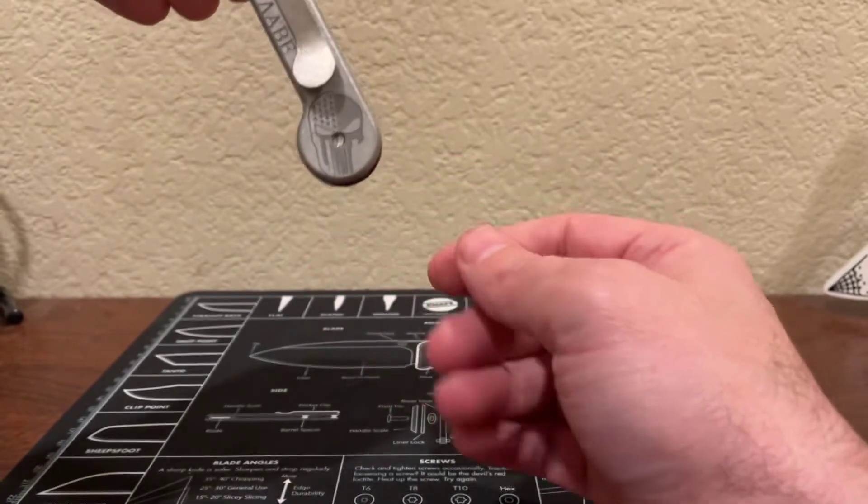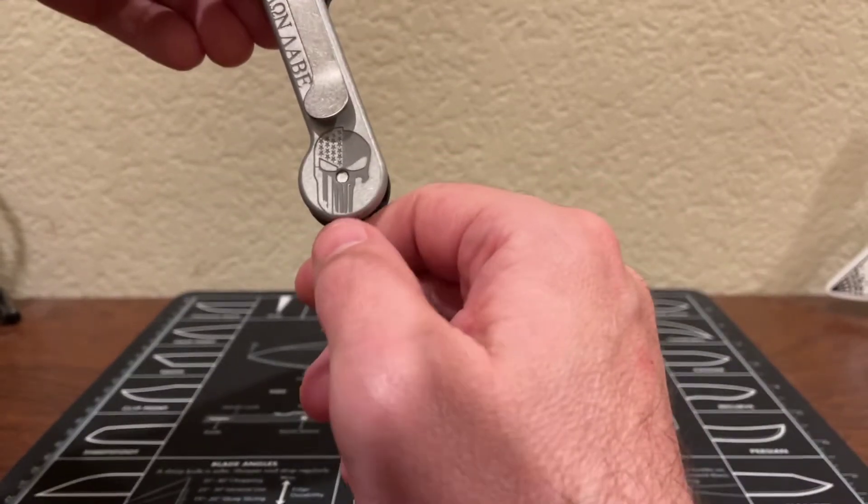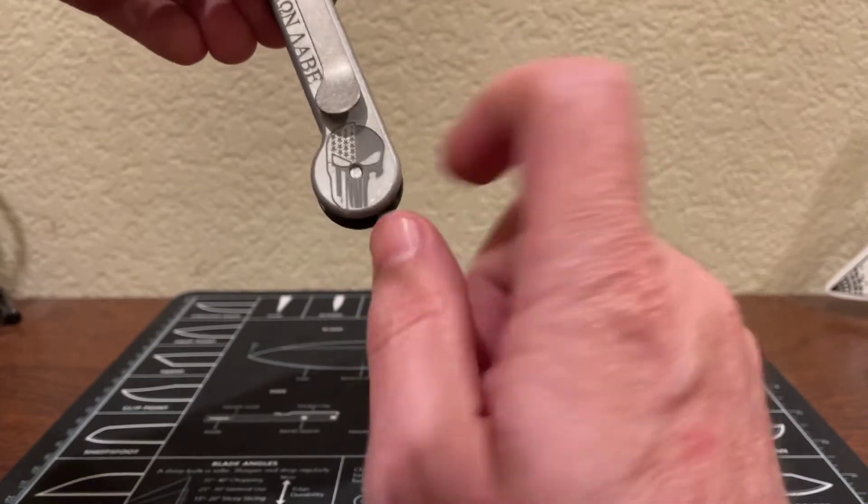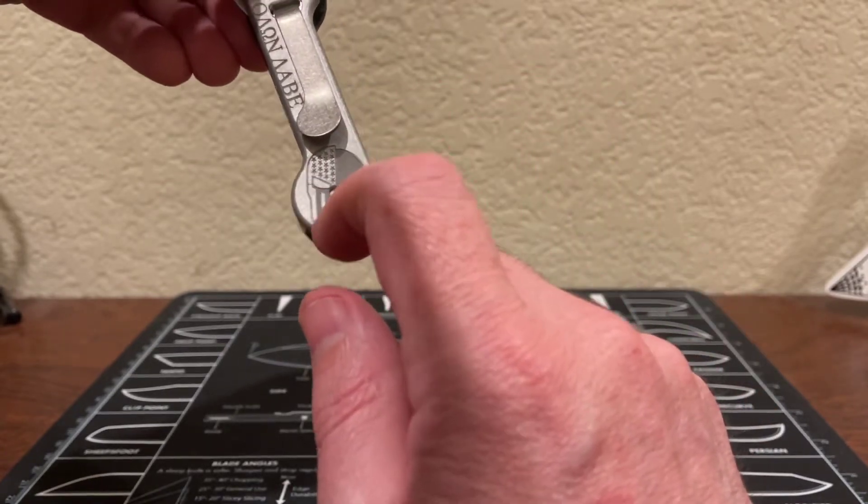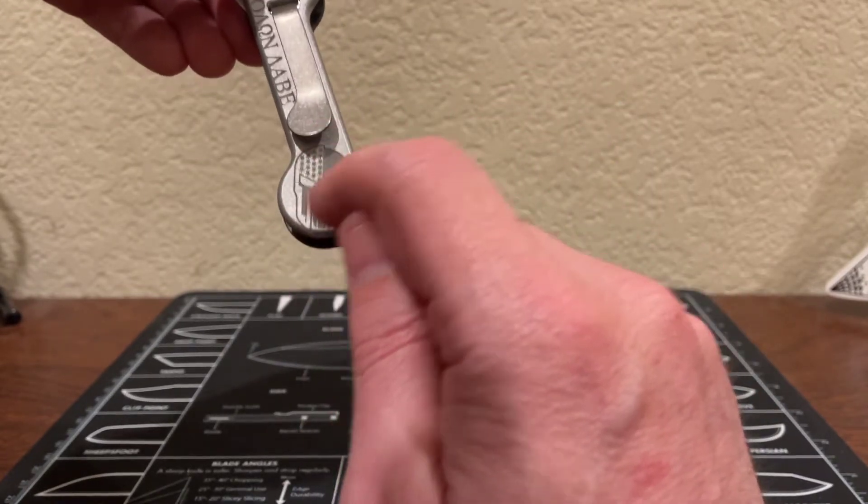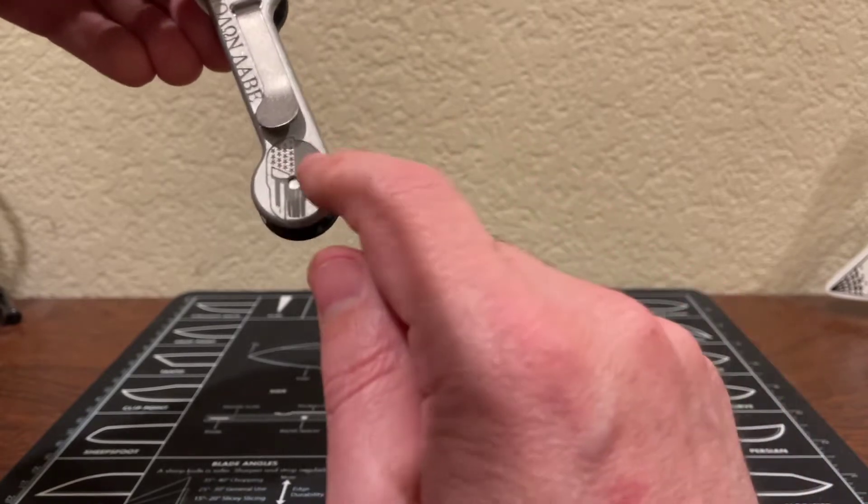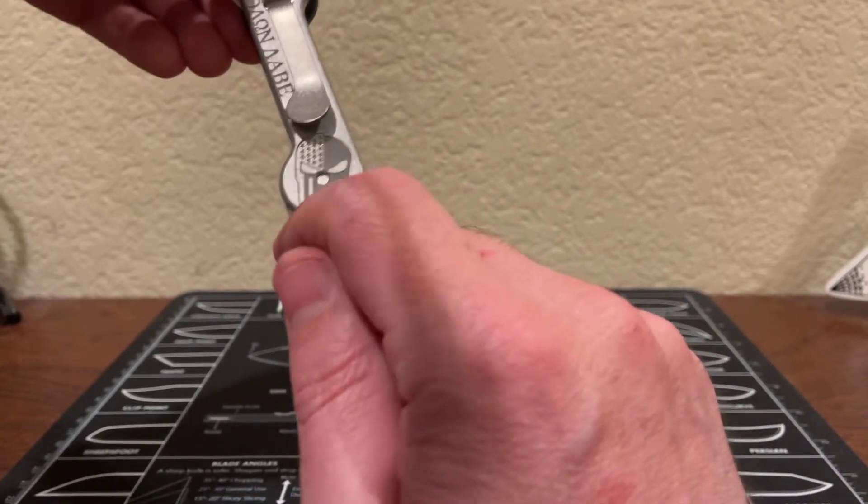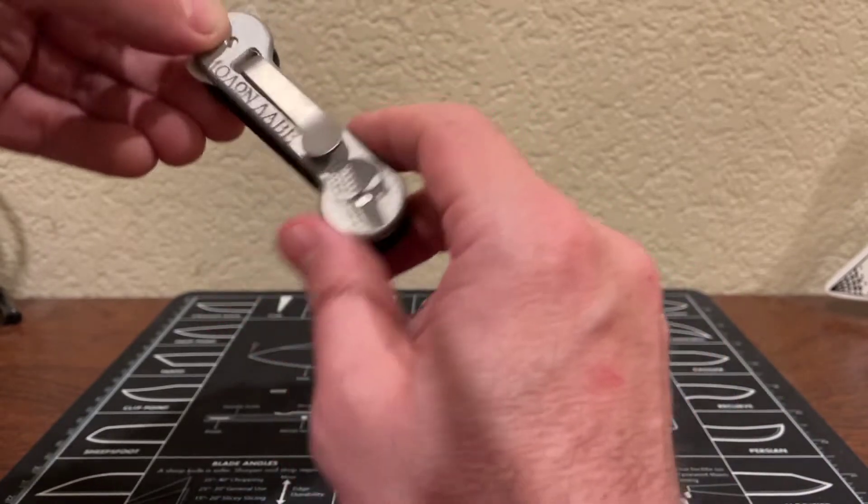This one has the Punisher version. I haven't seen this one before. I've seen where they've had Punisher and I've seen where they've had the Spartan helmet, but this one is like the Punisher with a half Spartan helmet that has the American flag in it, so that's kind of cool.